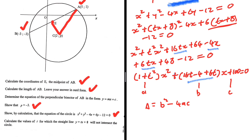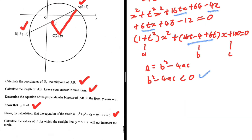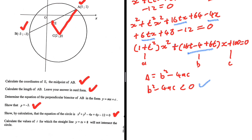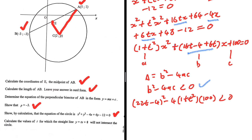We want to find the discriminant: delta equals B squared minus 4AC. We know that if B squared minus 4AC is less than 0, then the roots are non-real, meaning the line does not intersect the circle. So we need to find values of T for which B squared minus 4AC is less than 0. Here B is (22T minus 4), A is (1 plus T squared), and C is 100.